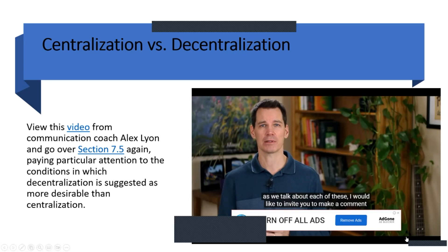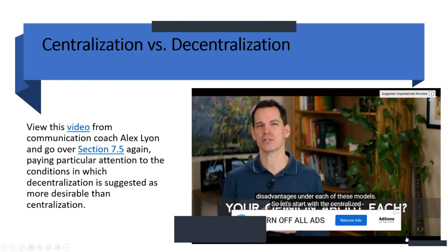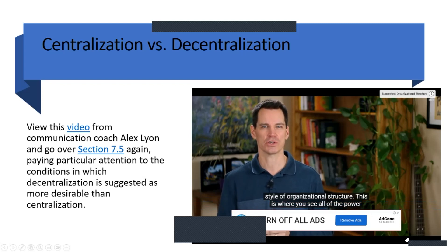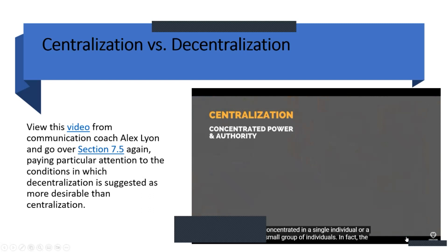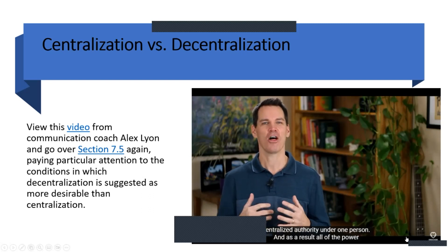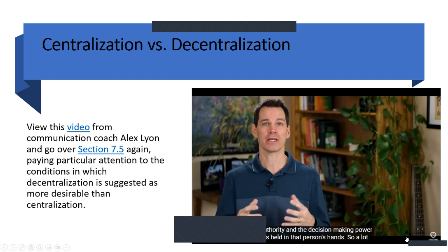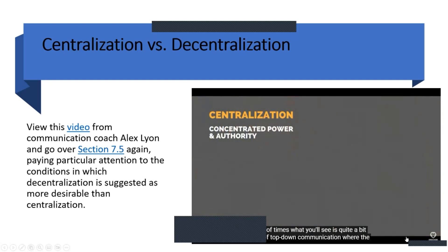Let's start with the centralized style. This is where all of the power is concentrated in a single individual or a small group. The telltale sign you're dealing with a centralized organization is where the top boss is the president, CEO, and chairman of the board — that's highly centralized authority under one person. As a result, all the power, authority, and decision-making is held in that person's hands.